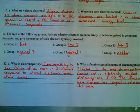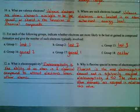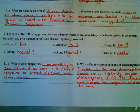Number 11. For each of the following groups, indicate whether electrons are more likely to be lost or gained in compound formation, and give the number of such electrons typically involved.